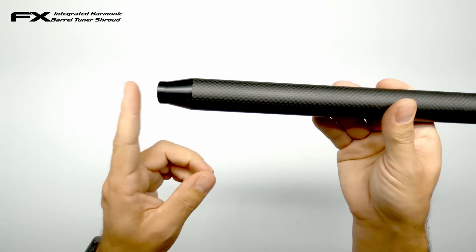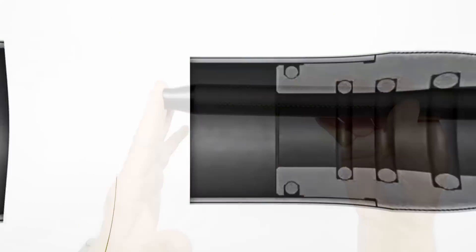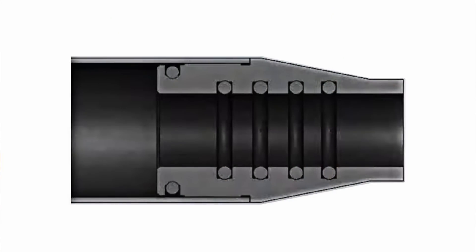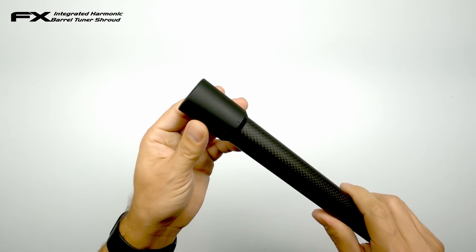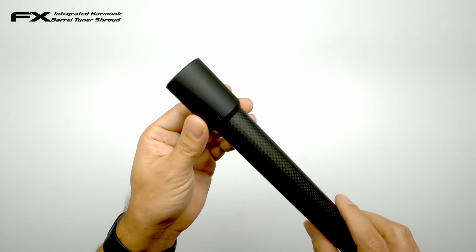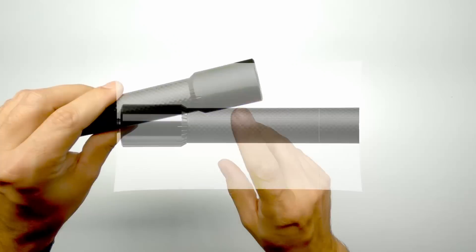At the back you have an integrated shroud or barrel dampening system with some o-rings and some clever wizardry from FX airguns. And at the front you have the main part and probably the most important part of this piece. The integrated barrel tuning weight.